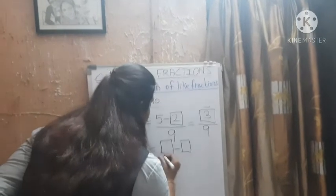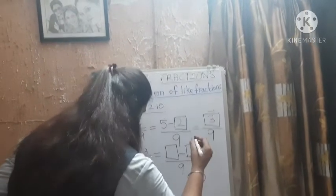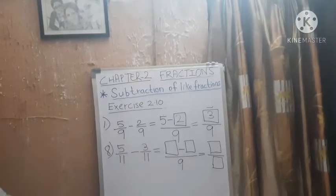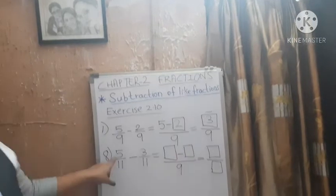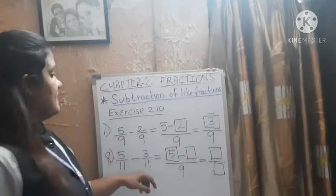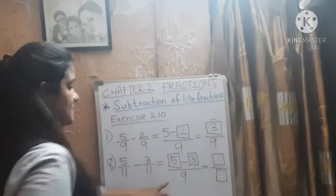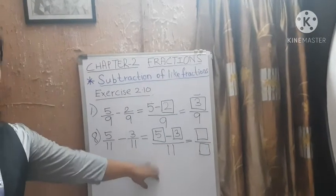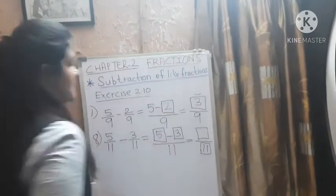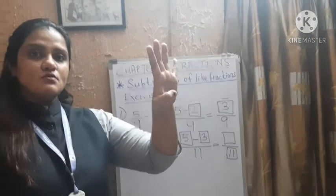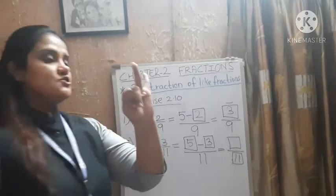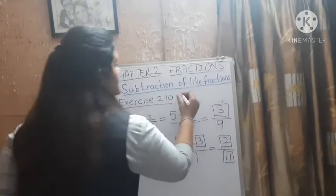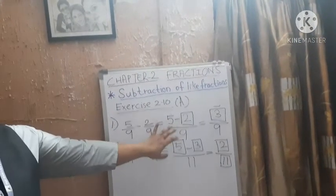Both boxes are blank. 5 is there, so write 5 in the first box. 3 is there, write 3 in the second box. Denominator is same — write the common denominator 11. 5 minus 3: 5 on your finger, close 3 — 1, 2, 3 — how many left? 2. Your answer is 2 by 11. Exercise 2.10 A part, fill in the blanks, you are going to do in your canopy book.